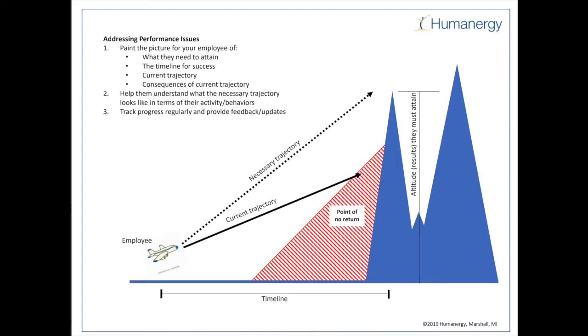What's important here is that we paint a clear picture for our employees of what they need to attain - the mountains, their timeline for success, the distance between now and the mountains, the current trajectory, what the impact is if they keep going the way they are, and the consequences of their current trajectory.